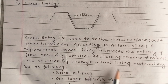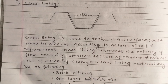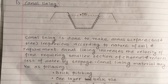Canal lining material may be as follows. The canal lining makes the surface impervious according to the nature of soil and the requirement. Canal lining increases the velocity of flow, requiring a smaller channel section.